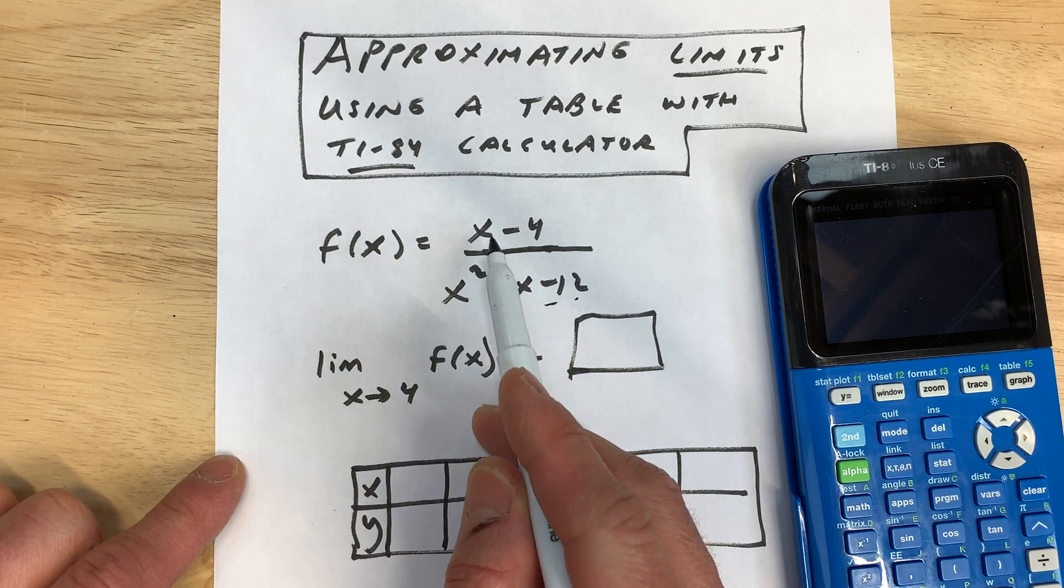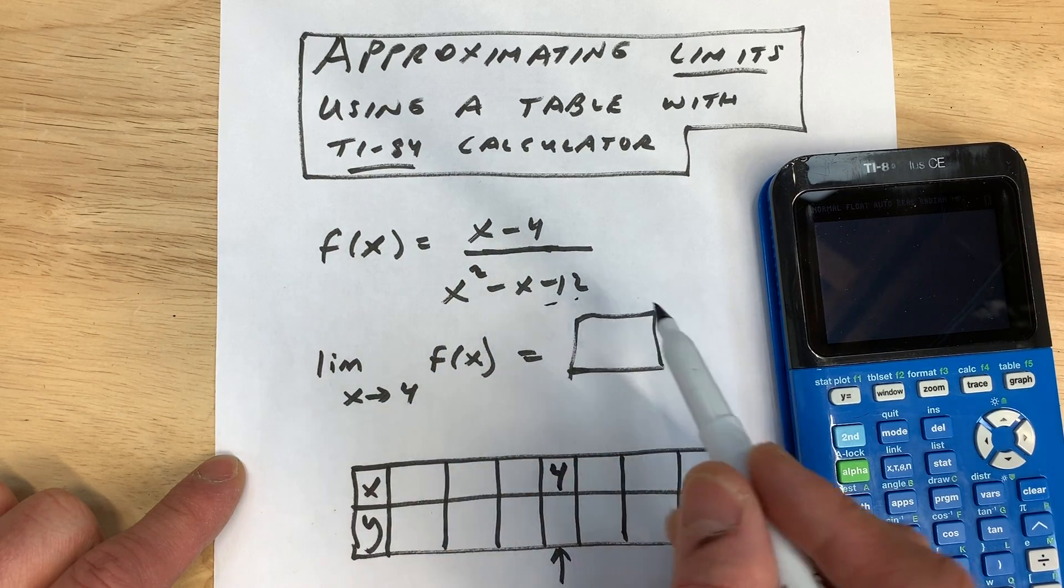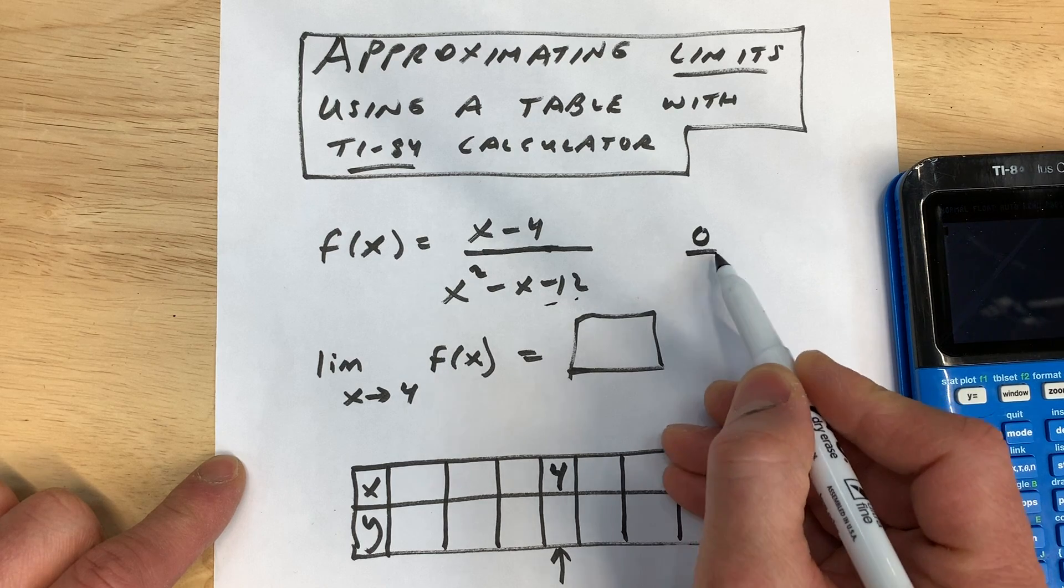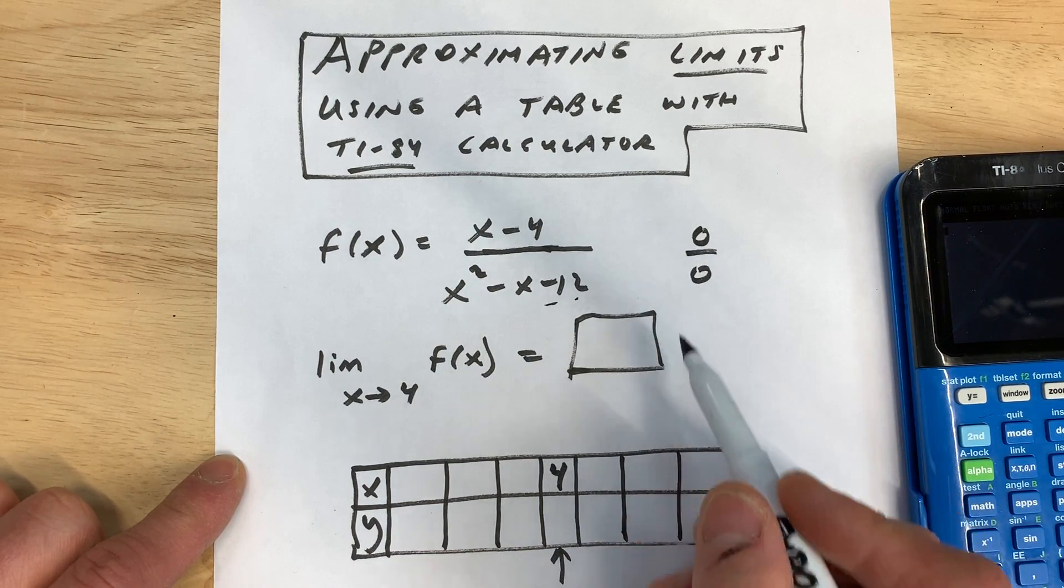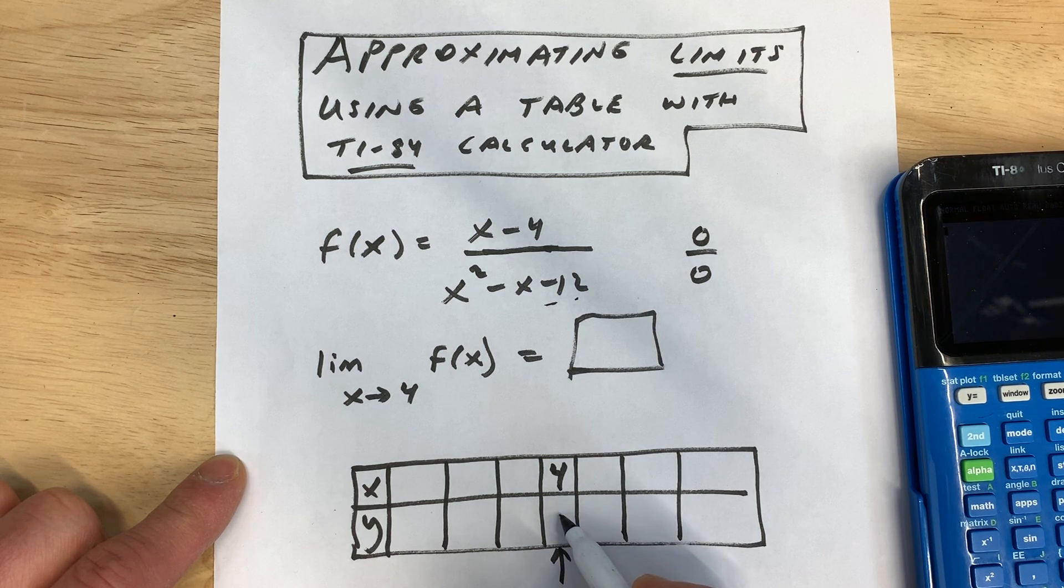Now if you try to put 4 in directly for x in this particular problem, what you're going to get is 0 divided by 0, which is called indeterminate, meaning we can't determine what the limit is.